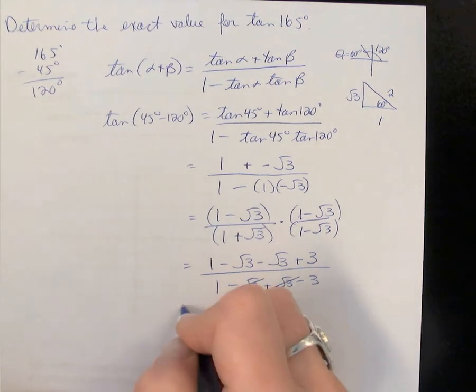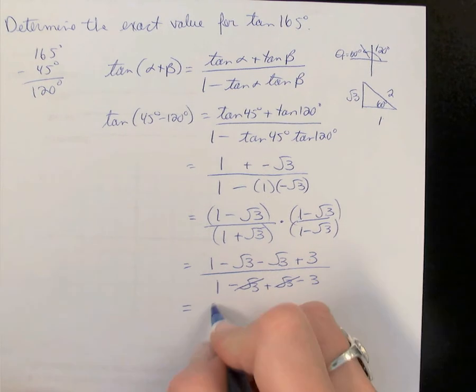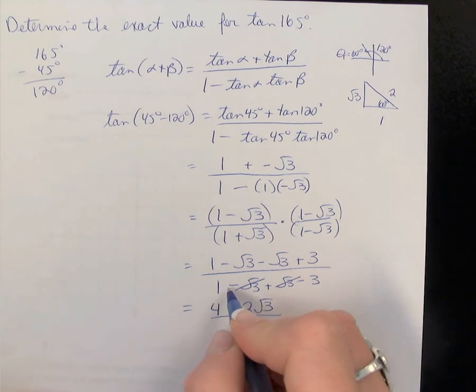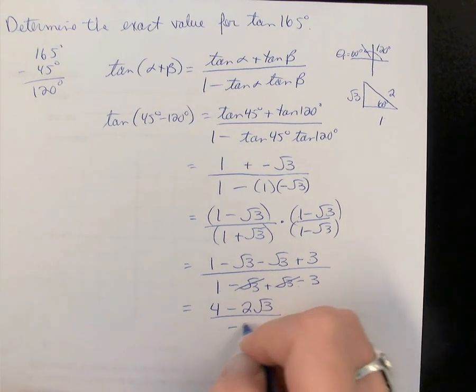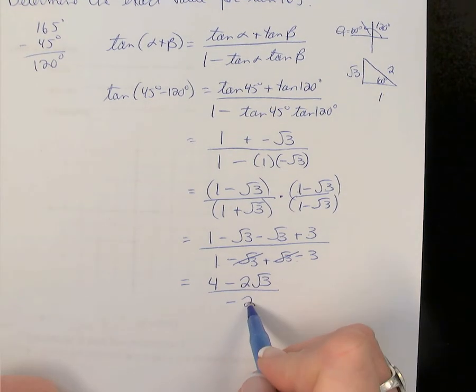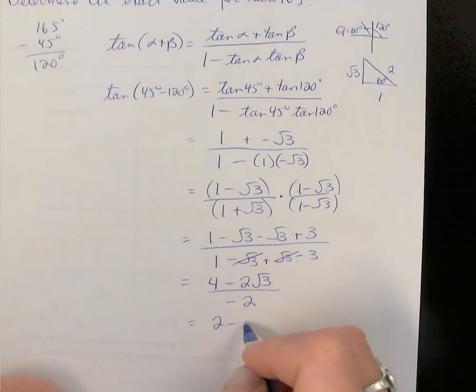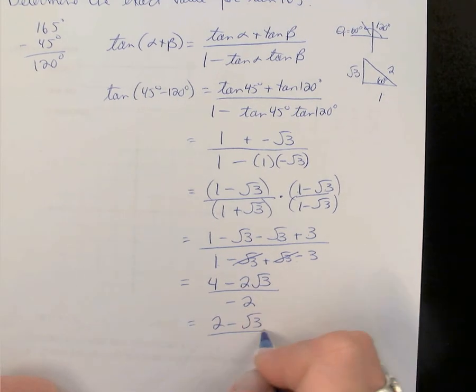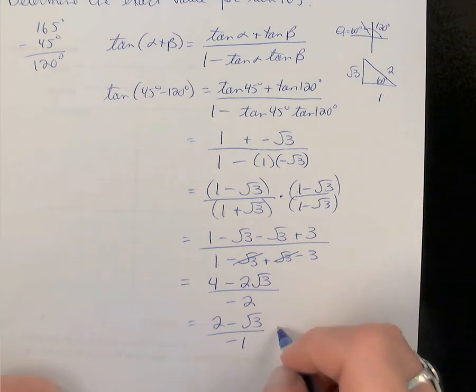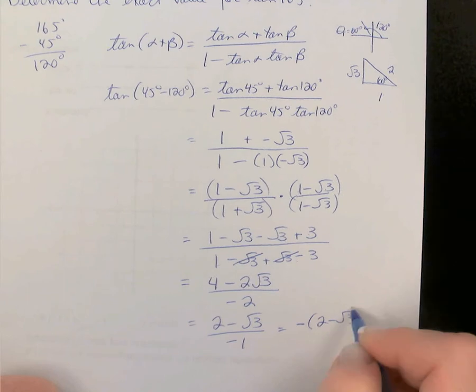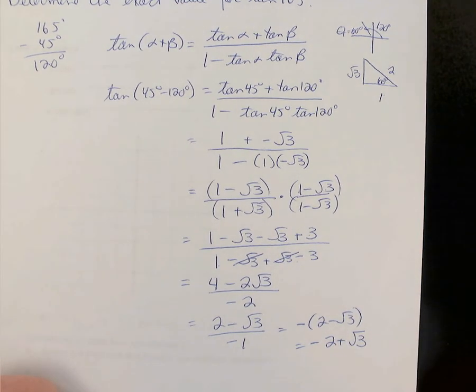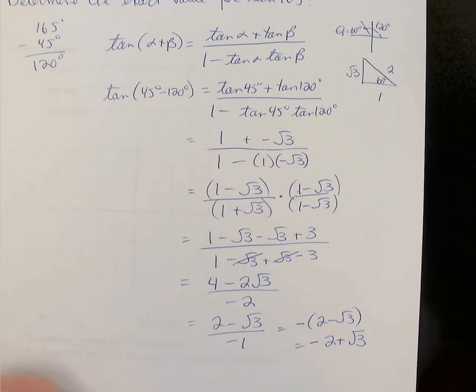Combining like terms, we have 1 plus 3 to give me 4. These are like terms. We have minus 2√3 divided by 1 minus 3 is negative 2. We can simplify this one further as 4, 2, and negative 2 are all divisible by 2. So let's cut each of those in half. And we don't leave a negative 1 in the denominator. We tend to move that up front. So that negative sign will be up front here. And then we can multiply it through the bracket. So our final answer is negative 2 plus √3 or maybe written as √3 minus 2.